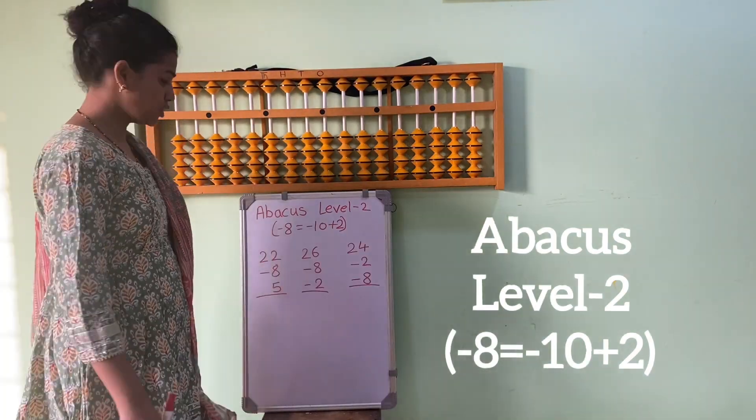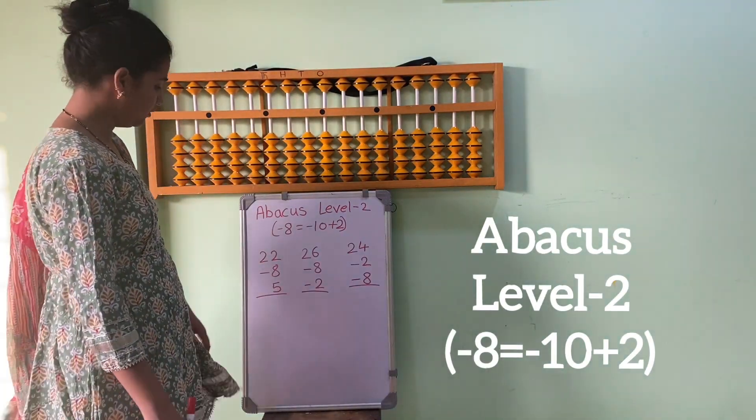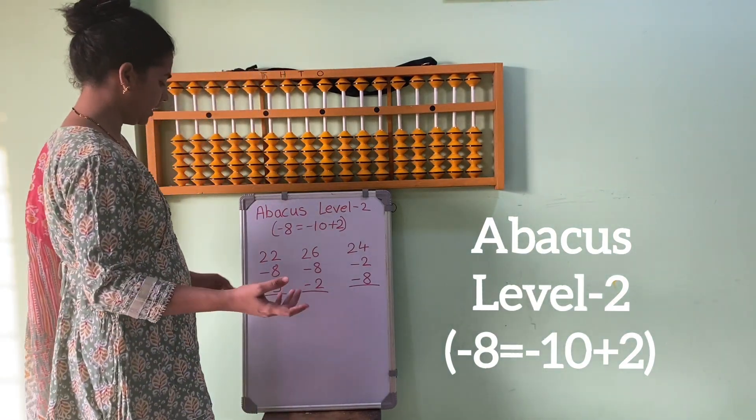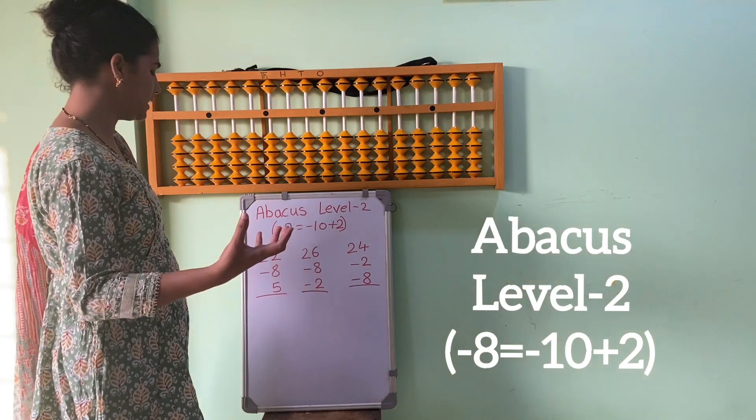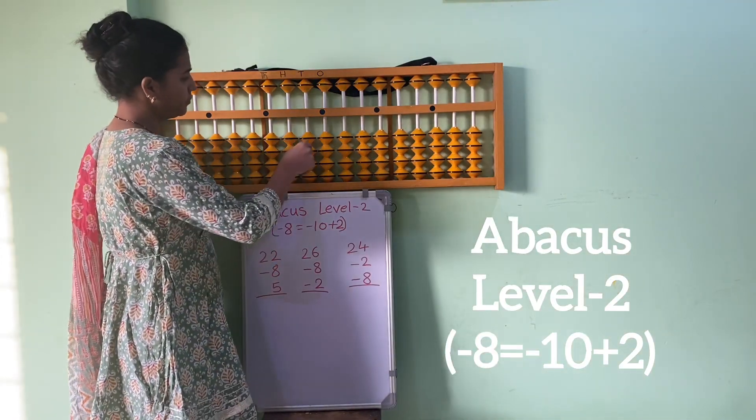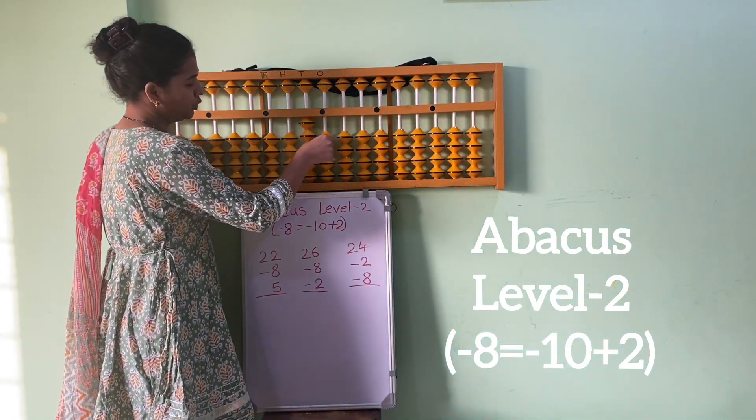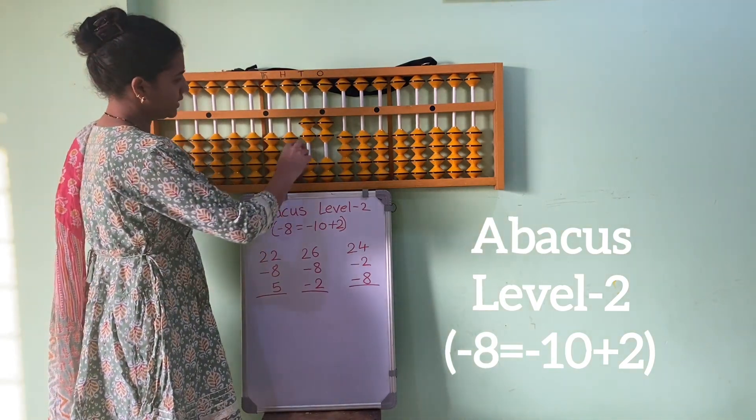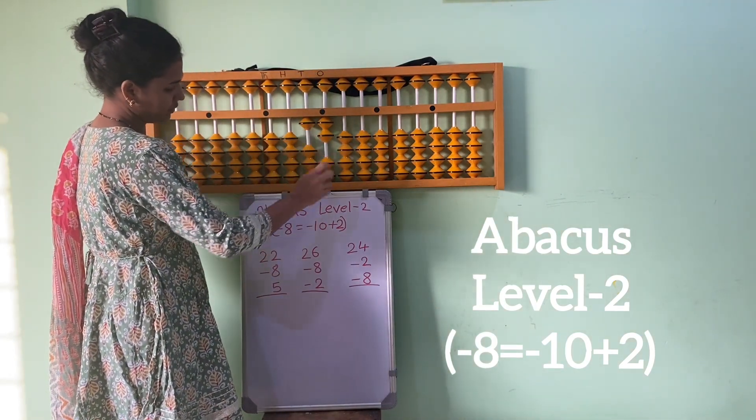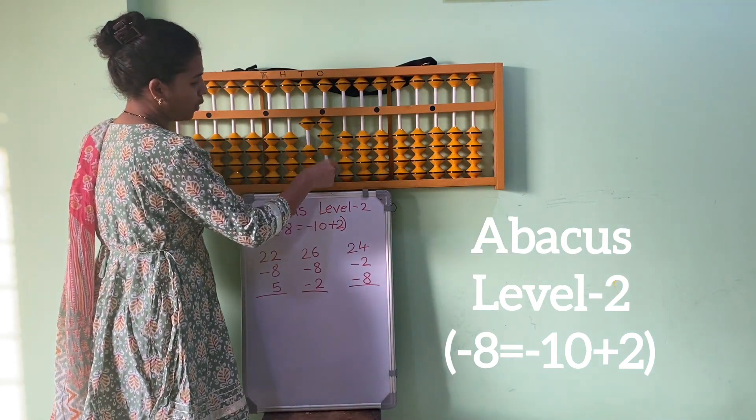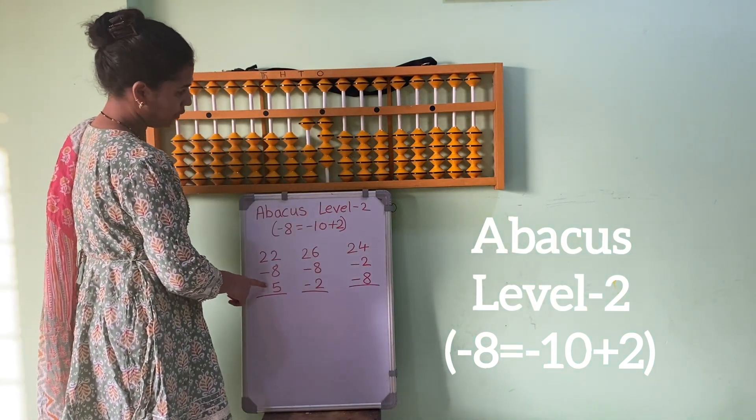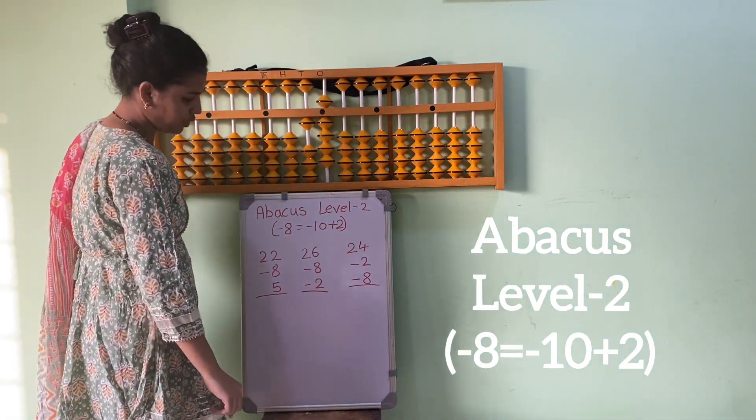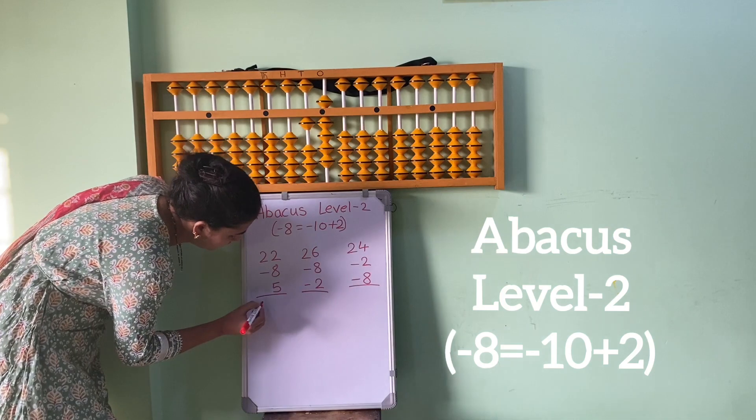Let's see another sum of minus 8 and minus 7. 22, 2, 2, 22. Minus 8, minus 8, minus 10 plus 2, 1, 2. Now add 5 in one's place. So what is the answer? 19.